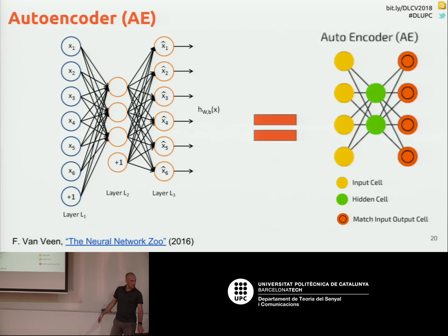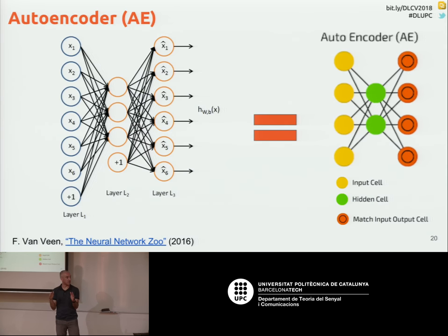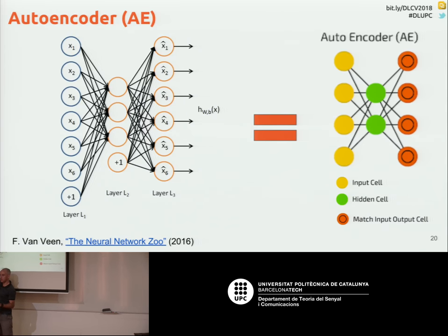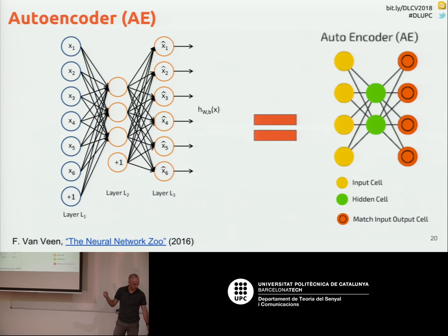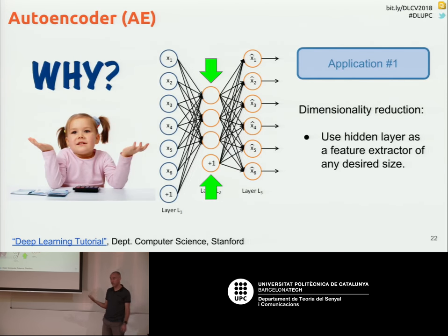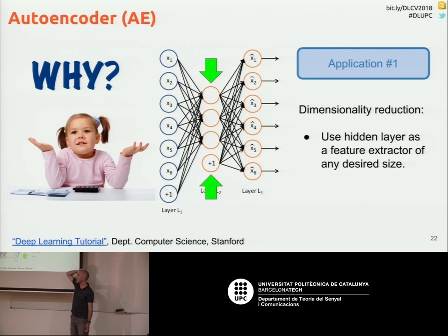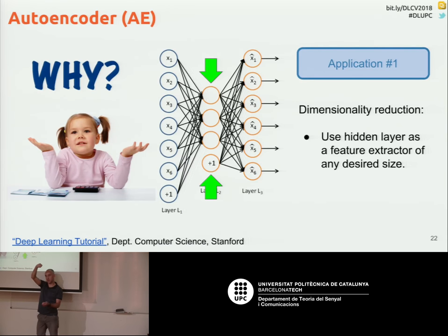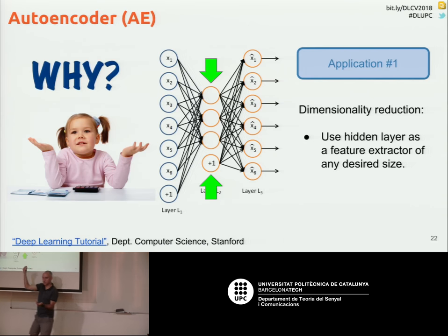Another word to be aware of is the autoencoder. An autoencoder is an architecture where the task it has to solve is just to reconstruct at the output the same data it received at the input. The task is simply: I want the output to be the same data I had at the input. We can define these architectures without any labels to train them, making this a basic architecture for unsupervised learning — probably the most basic one. You can use these features, for example, to generate a compressed representation of any dimension you want, compacting the information at the input.